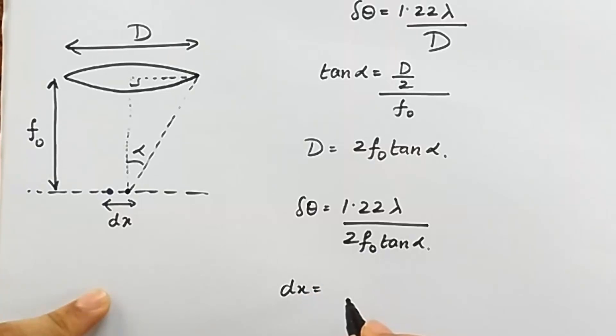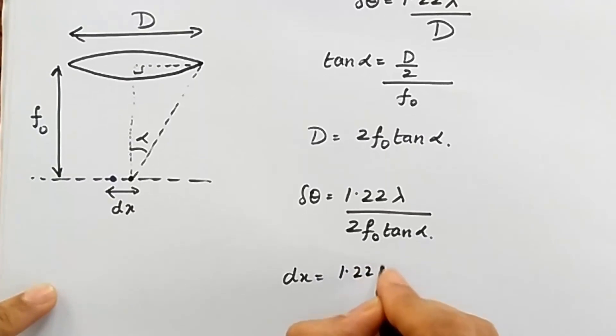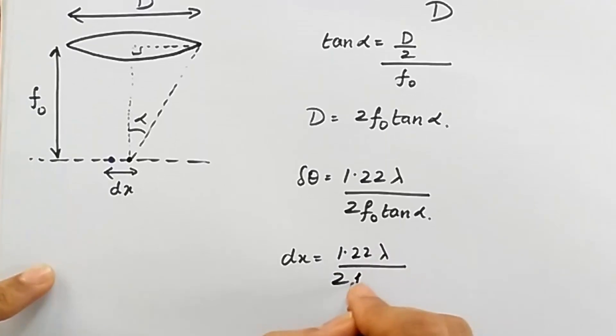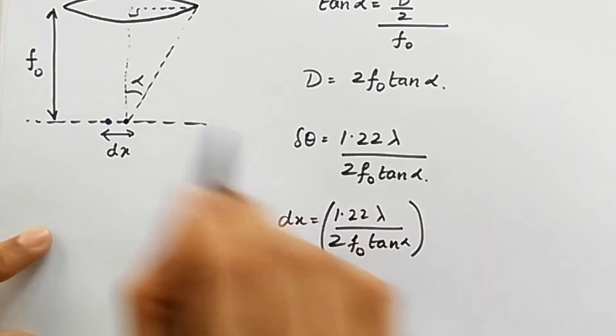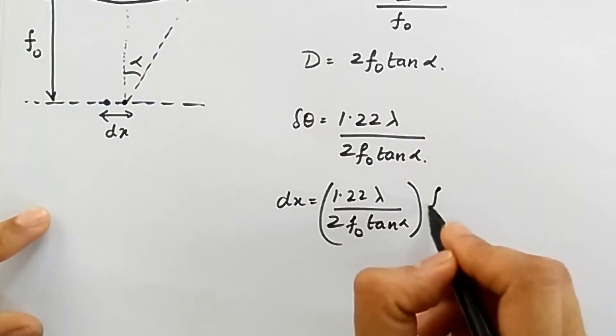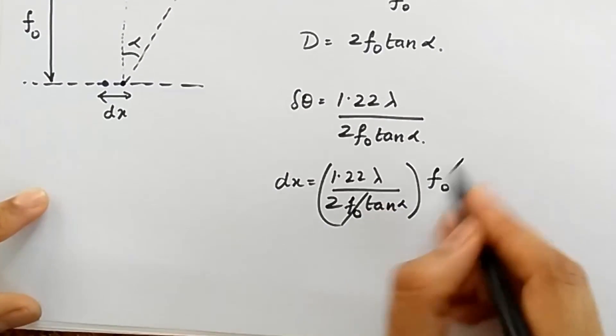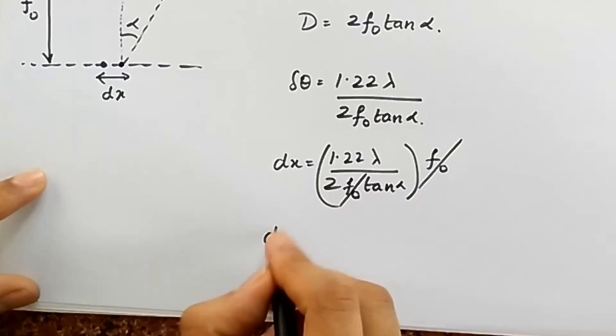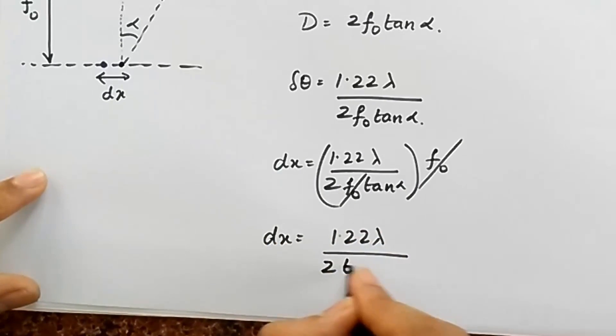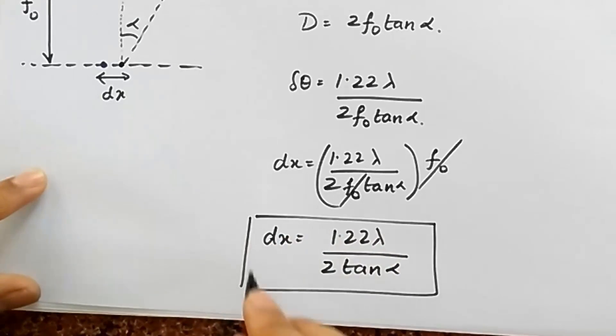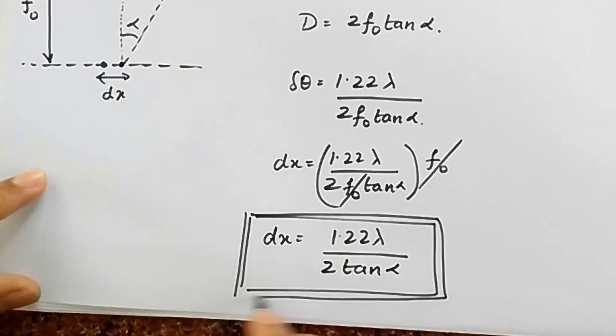And so what I get now is dx is going to be 1.22 lambda divided by 2 f0 tan alpha. I've just multiplied this number by this distance f0, and f0 immediately cancels. So I get the smallest separation that I can achieve is 1.22 lambda divided by 2 tan alpha. This is the expression which I get.